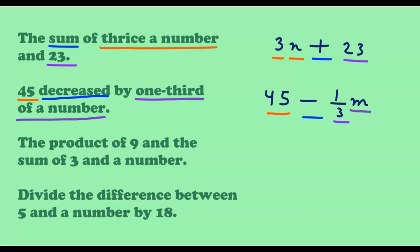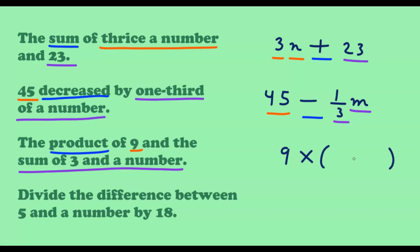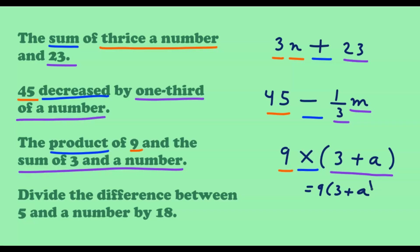Next, 'the product of nine and the sum of three and a number.' We have a product, so we use multiplication, and we use parentheses for the sum portion. The sum of three and a number — using a — is 3 plus a. Multiplying by 9 gives us 9 times (3 plus a), which we can also write as 9(3 + a).